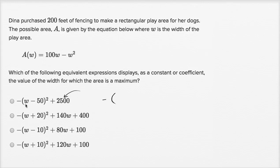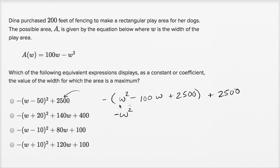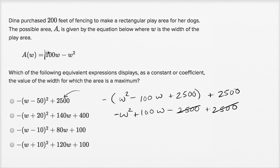This would be the same thing as: negative — W minus 50 squared is W squared minus two times 50 times W, so minus 100W plus 2,500. And then you have plus 2,500 out here. Distributing the negative sign gives us negative W squared plus 100W minus 2,500 plus 2,500 — those two things cancel each other out, and you're left with negative W squared plus 100W. This would be true for all of these; they're all just algebraic manipulations of the original expression.